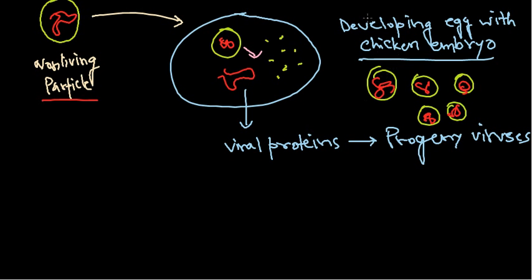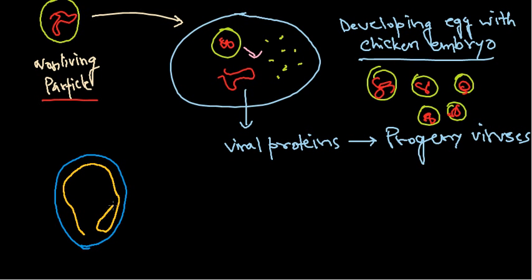We need to know the basic structure of an egg before going into the discussion. If I draw the basic structure of the chicken egg, it has several layers. On the back side of the egg there is an air pad-like structure, and inside that region we have the actual embryo.